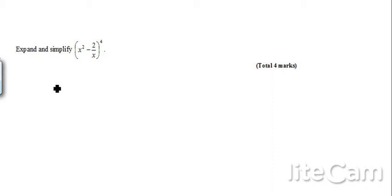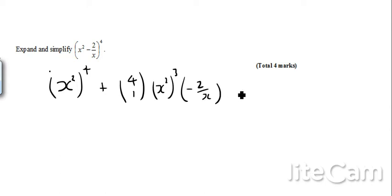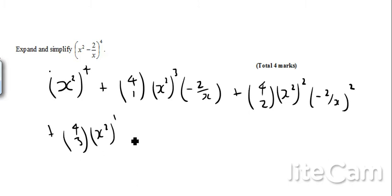If we remember the binomial expansion, I think the key thing is to keep brackets in. So we've got x squared in brackets to the power 4, and then we're going to have 4 choose 1, x squared to the power 3 times by minus 2 over x, and then 4 choose 2, x squared squared, and then minus 2 over x squared, and then 4 choose 3, x squared to the power 1, minus 2 over x to the power 3, and then lastly, minus 2 over x to the power 4.